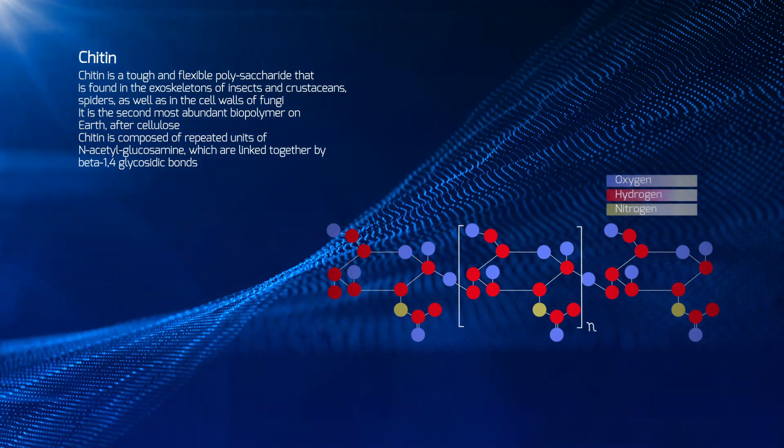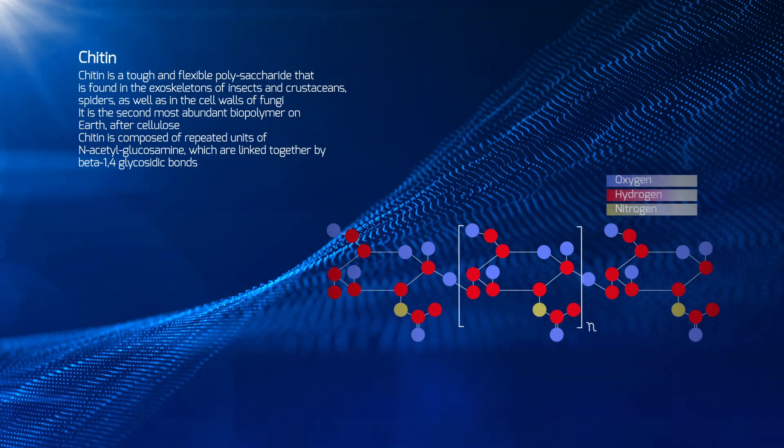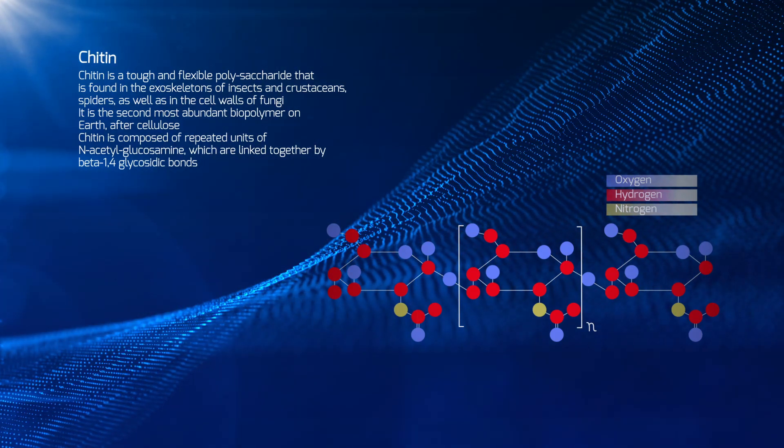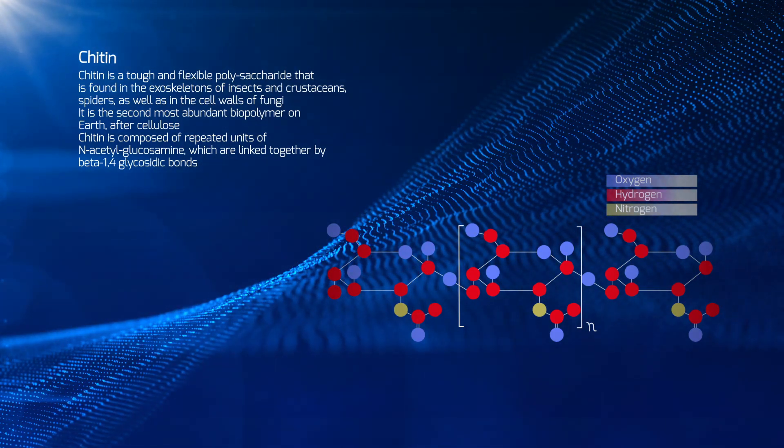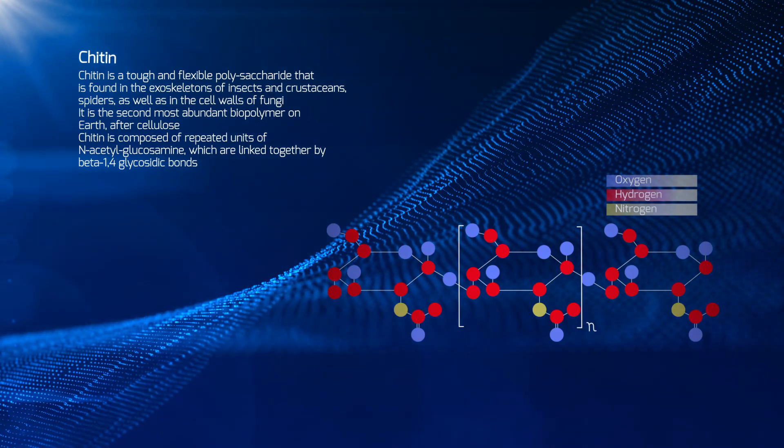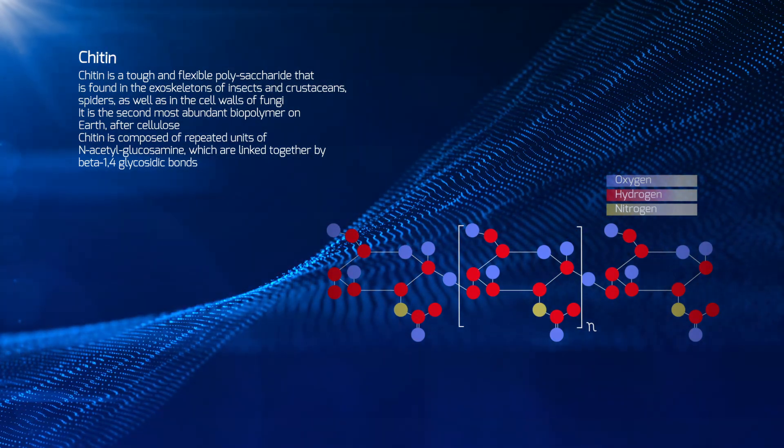Chitin is a tough and flexible polysaccharide that is found in the exoskeletons of insects and crustaceans, spiders, as well as in the cell walls of fungi. It is the second most abundant biopolymer on earth, after cellulose.